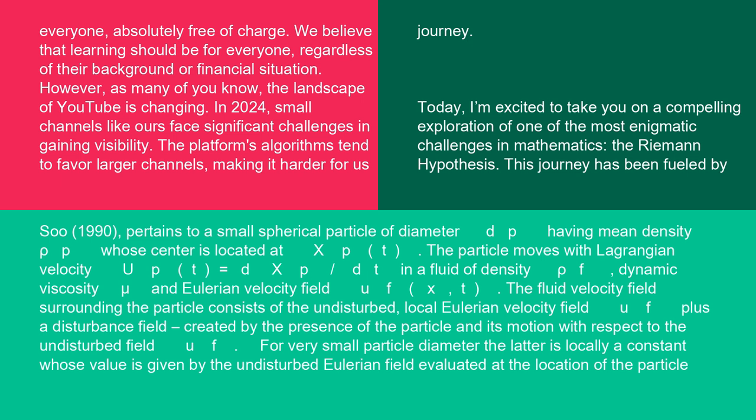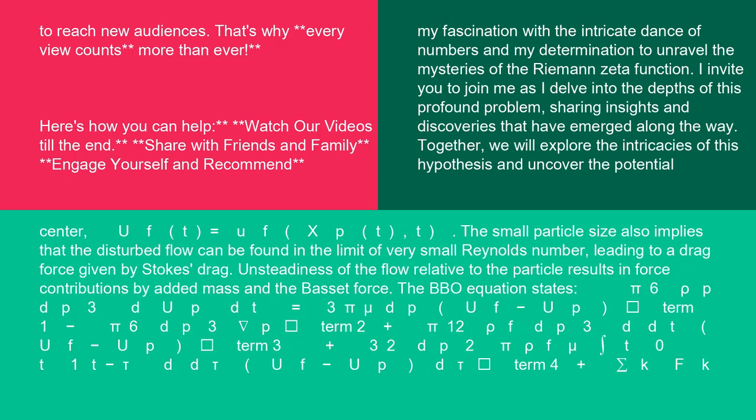For very small particle diameter, the latter is locally a constant whose value is given by the undisturbed Eulerian field evaluated at the location of the particle center: uf(t) = uf(xp(t), t).